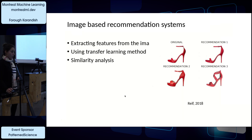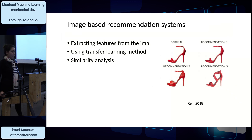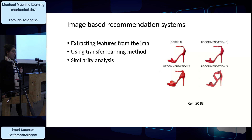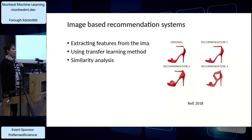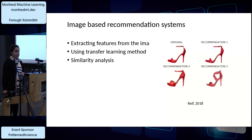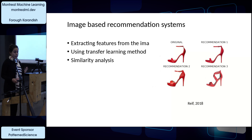Image-based recommendation systems work by extracting features from images using transfer learning and similarity analysis. Amazon uses this technology extensively to sell more products or recommend similar products to customers, based on the color, edges, and size of the images shown.